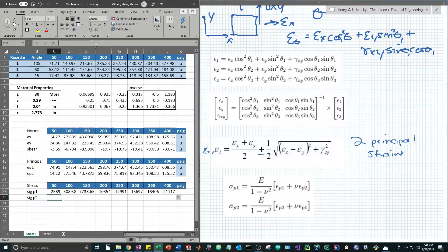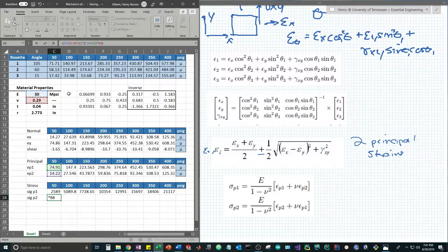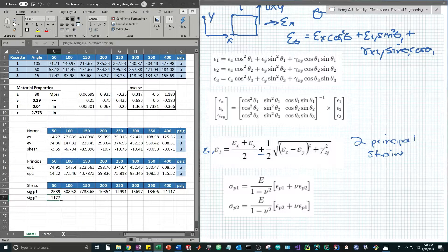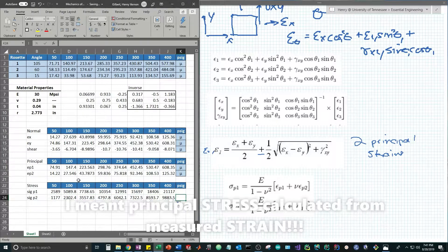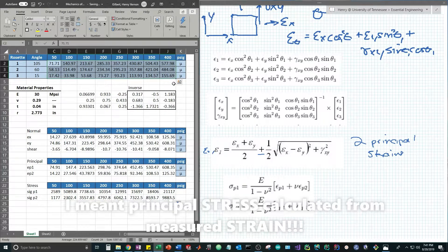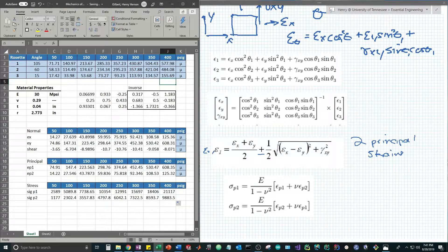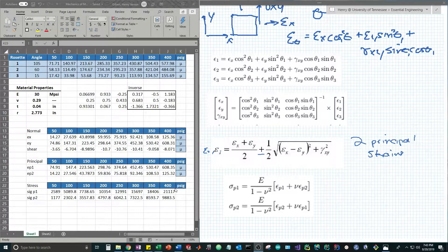The second principal stress follows the same idea. It's Young's modulus divided by 1 minus Poisson's squared, multiplied by the second principal strain plus the first times Poisson's ratio. Once again let's make all those material properties absolute reference. We hit enter and drag it across and let it calculate the principal stresses from the measured stress values using a strain rosette at each pressure value. We've done it. We've calculated principal stress from applied strain in psi.